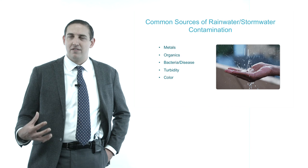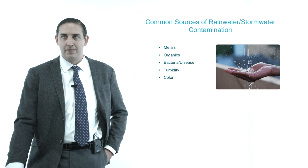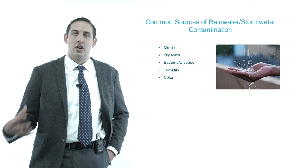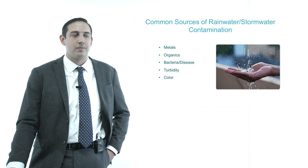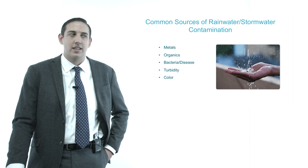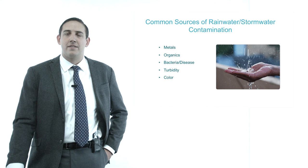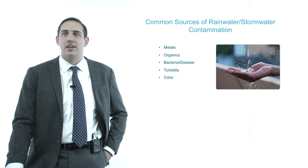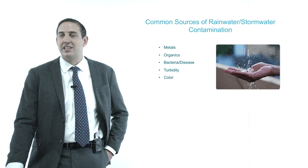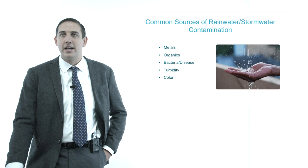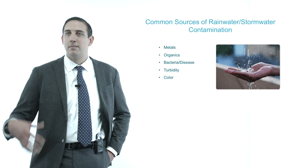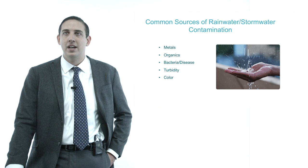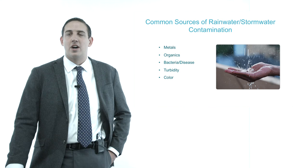The problem is, once rainwater hits the surface and you start collecting it, it is no longer a clean water source. There are five primary sources of contamination found in both rain and stormwater — and stormwater is always more contaminated than rainwater. These are: metals (things like zinc and lead, often from flashing material in roof construction), organics (from fertilizer to smog, which is a particulate that can dissolve into water), bacteria and disease from contact with animals like pigeons or birds, turbidity from particulate matter picked up along the way, and discoloration, often associated with dissolved metals in the water.